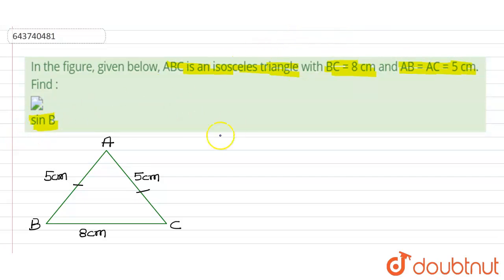For this, let's drop a perpendicular from point A on BC. This is 90 degrees.